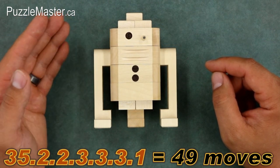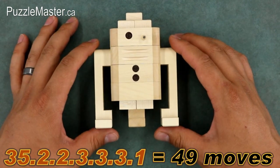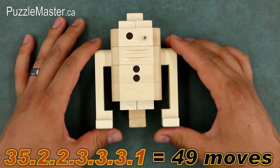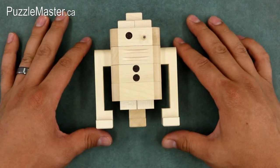So it's 35 moves to get that first piece off, two moves to get the next piece, two more for the next, and so on. Obviously getting that first piece off is the big task in this puzzle.